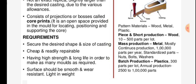Pattern materials include wood, metal, and plastic. Wood is used for piece and short production — 10 to 500 parts per lot. Metal is used mostly for continuous mass production — 1 lakh parts per year — for standardized parts like nuts, bolts, and washers. Plastics are used for batch production — 300 parts per lot — with annual production of 2,500 to 1 lakh parts.